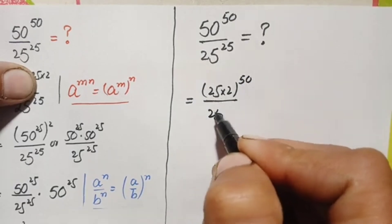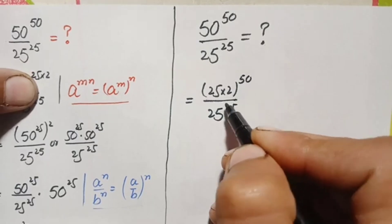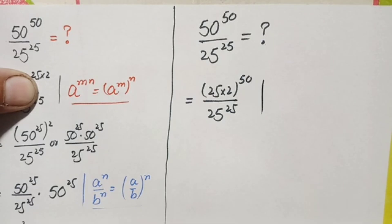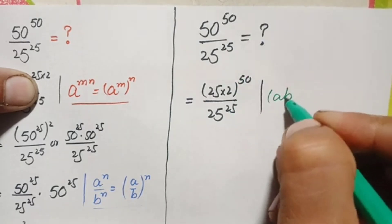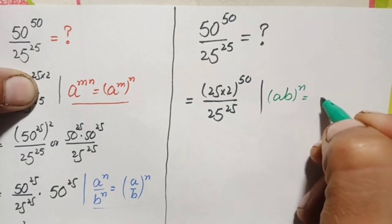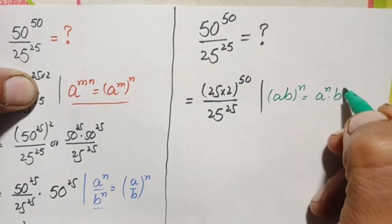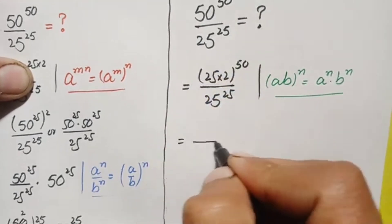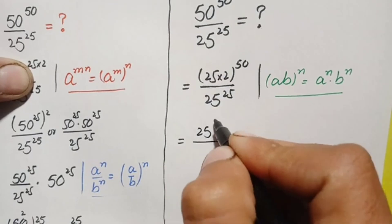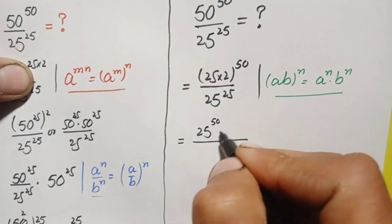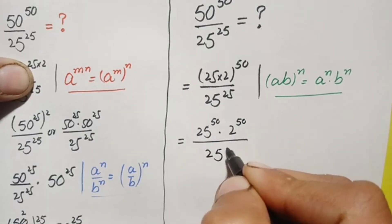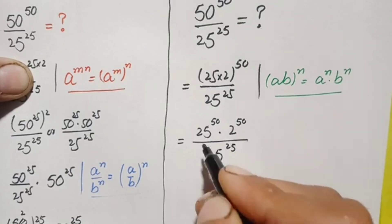Here we will use the exponential identity in the numerator: a times b, raised to power n, equals a raised to power n times b raised to power n. Using this identity, the numerator becomes 25 raised to power 50 times 2 raised to power 50, divided by 25 raised to power 25.